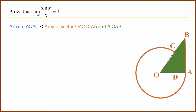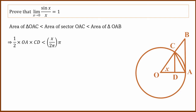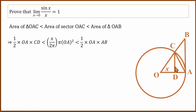So, triangle OAC — small triangle area equals half multiplied by base multiplied by height. The sector area formula: angle x divided by 2π, multiplied by π r squared. Here π cancels.